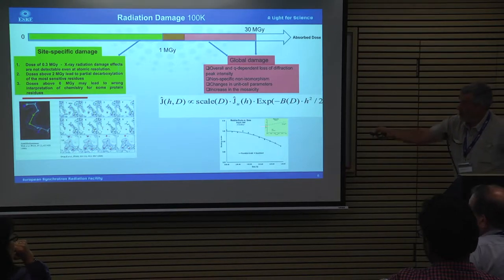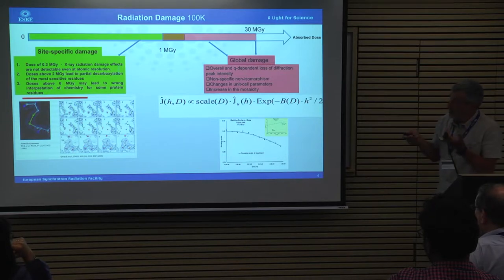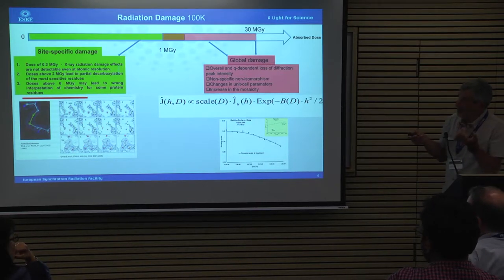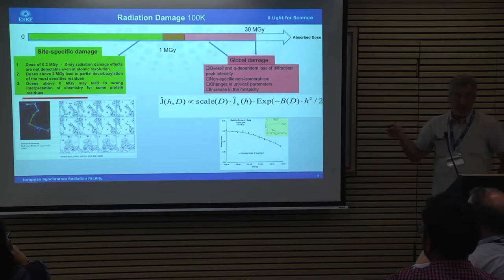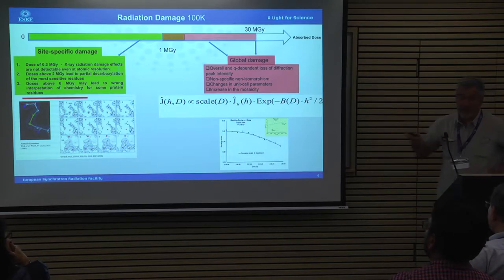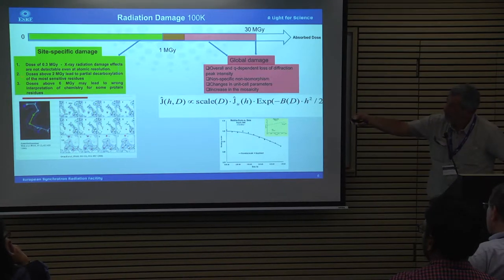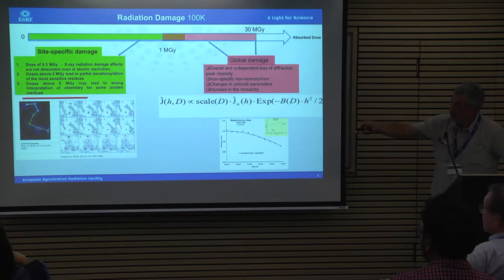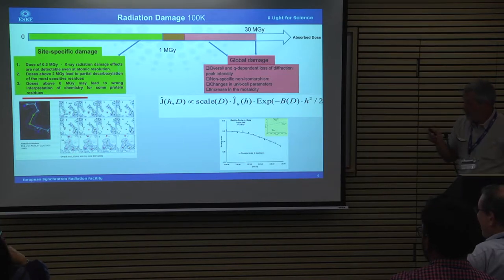We need to take into account possible site-specific damages, which happen even at very low dose. We can collect data up to about 30 MGy, after which the crystal is completely destroyed. But we also need to consider the influence of radiation damage on our structure — when electron density disappears because atoms leave the density due to radiation effects.